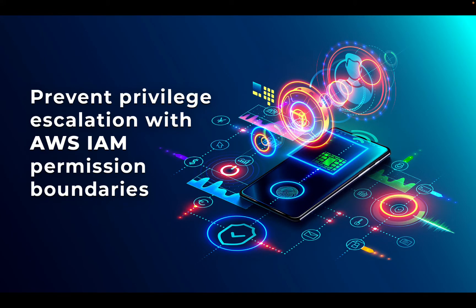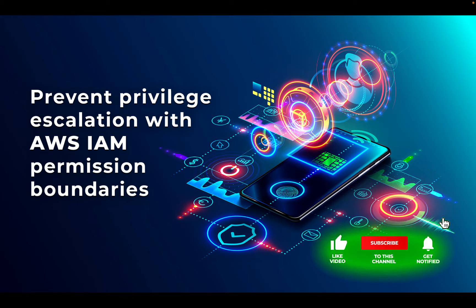In this video, I'd like to talk about another set of permissions you can apply to your users and roles in your AWS account. In addition to IAM policies, we have something called IAM permission boundaries. Permission boundaries enable you to determine the maximum level of permissions that an individual user or IAM role can have within an AWS account. A key benefit is the ability to prevent privilege escalations where IAM users may circumvent loopholes within IAM policy configurations and give themselves more permissions than they should have.